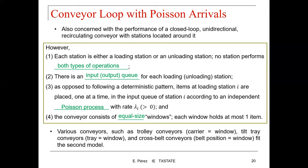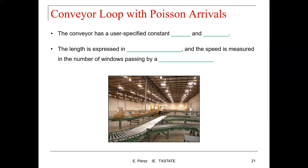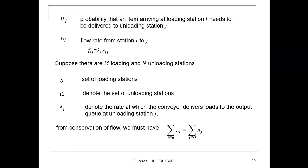Examples of this type include trolley conveyors where the carrier represents a window, tilt tray conveyors where the tray equals a window, and cross belt conveyors where the belt position equals a window — all fitting this second model: the conveyor loop with Poisson arrivals. The conveyor has a user-specified constant length and speed. The length is expressed in number of windows, and the speed is measured in the number of windows passing a fixed point per unit time. PIJ represents the probability that an item arriving at loading station I needs to be delivered to unloading station J.